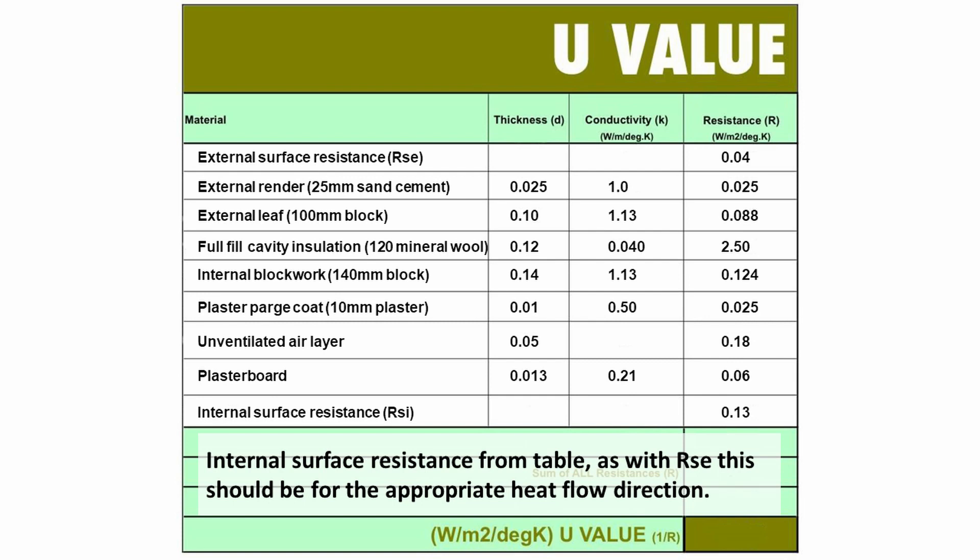The one layer there that you'll notice is missing a conductivity is the unventilated air layer behind the plasterboard, which just has a standard value. And again, if you look back over last lecture, you'll understand why.